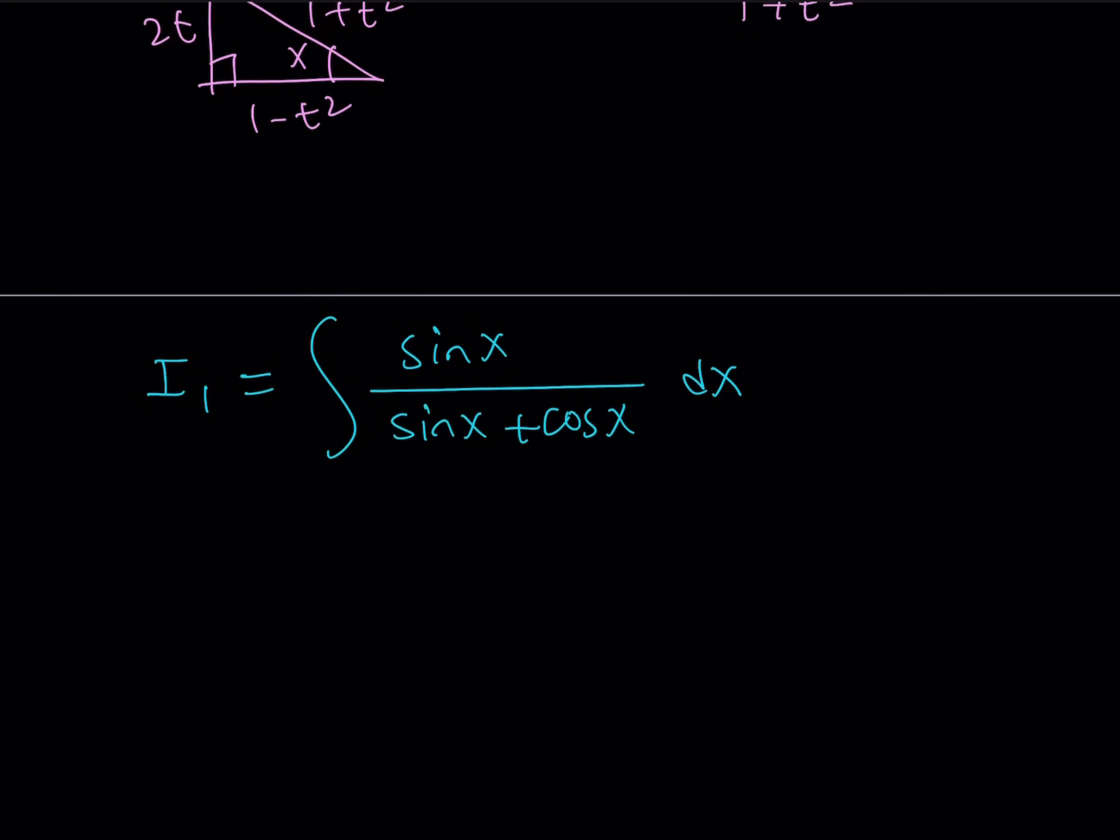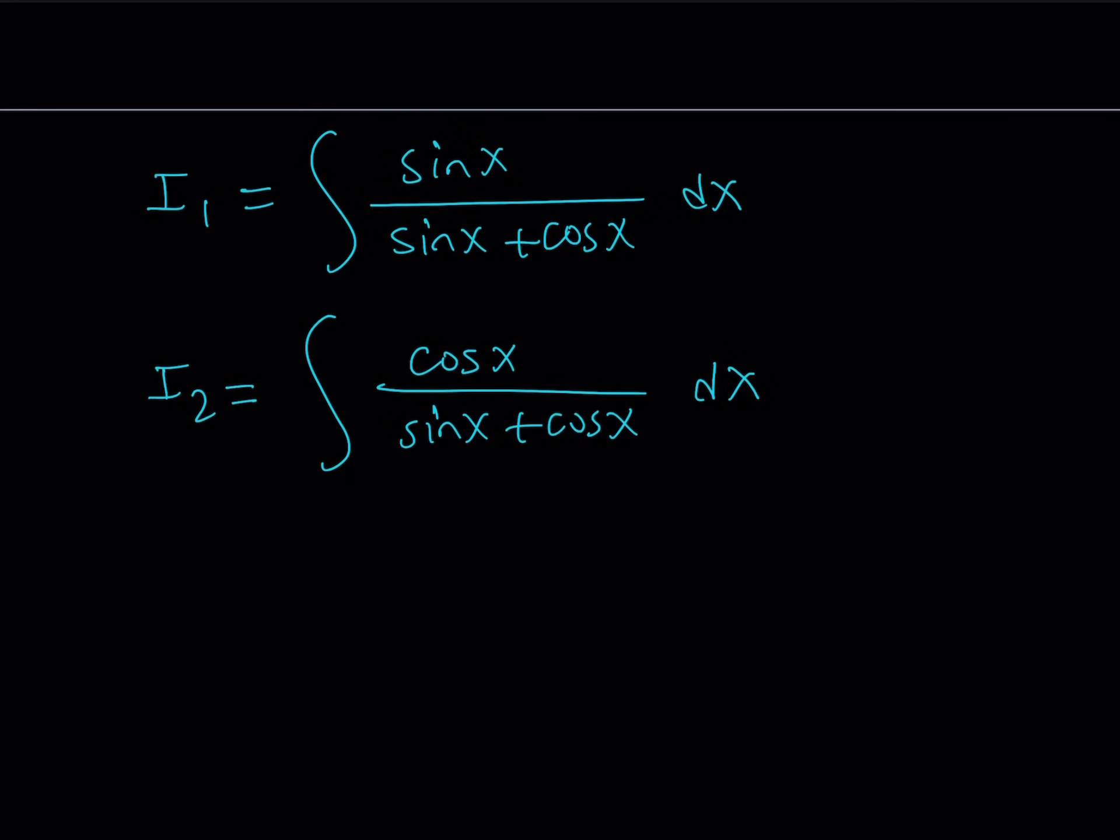And then I'm going to define another integral, which is like a counterpart, and that's going to be i2. And i2 is going to be the integral of cosine x divided by sine x plus cosine x dx. Hopefully, you start seeing what I'm going to do. I'm going to be putting these together. Because if you go ahead and add these two integrals, you're going to get sine x plus cosine x divided by sine x plus cosine x, which is 1.